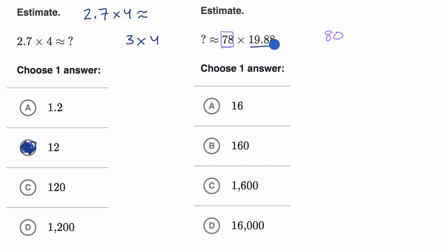It's closer to 20 than it is to 19. And even if it was closer to 19, just to estimate, I probably would still go to 20 because it's easier to multiply with. So this is roughly equal to 80 times 20.